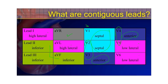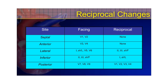You have to understand reciprocal changes if you're trying to diagnose a STEMI or STE mimic. If you have any reciprocal changes, throw STE mimic on the back burner and consider the patient to be having a STEMI until proven otherwise, because there are very few STE mimics that will show reciprocal changes. Reciprocal changes mean that if you have ST elevation in leads facing a certain area of the heart, the reciprocal leads may show ST depression — the opposite. The septal leads don't really have reciprocal leads.